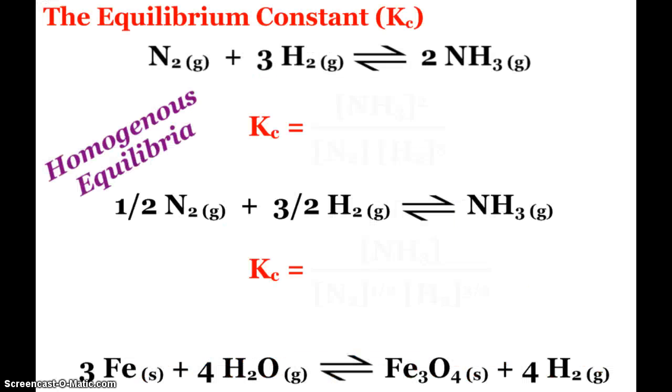So let's look at a couple examples. Here's our ammonia production equation. So my Kc is the concentration of ammonia squared, and then on the bottom, concentration of nitrogen, concentration of hydrogen cubed. Now this is a homogeneous equilibria because everything is in the gaseous phase. Everything is in the same phase. And most of the ones we look at here will be like that.